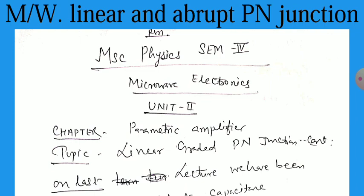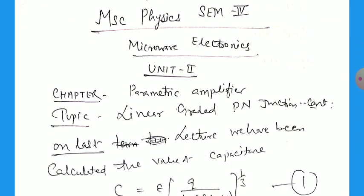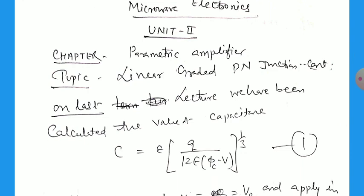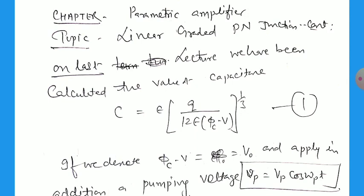In the last turn, we discussed the linear graded P-N junctions. The remaining portion is that we have calculated the value of C equal to epsilon multiplied by Q divided by 12 epsilon phi C minus V power 1 by 3, where Q is the charge, epsilon is the permittivity of the medium, phi C minus V, phi C is the contact potential and V0 is the applied negative potential here.